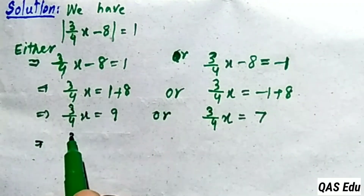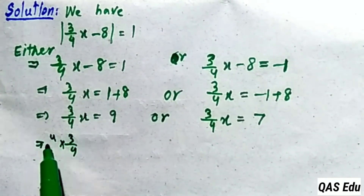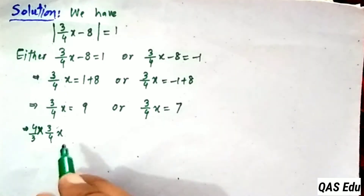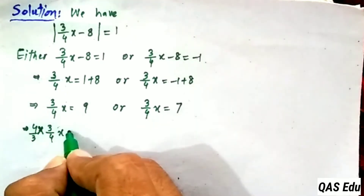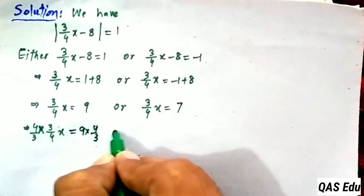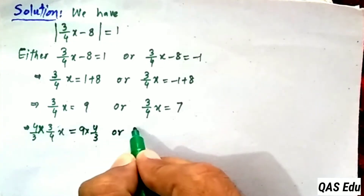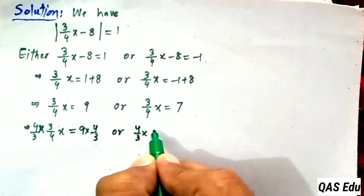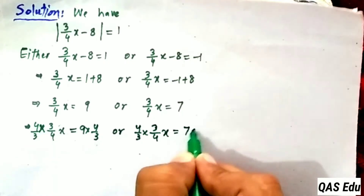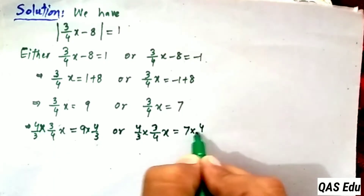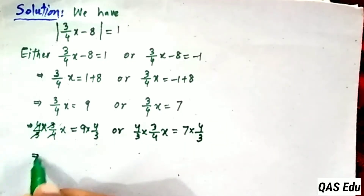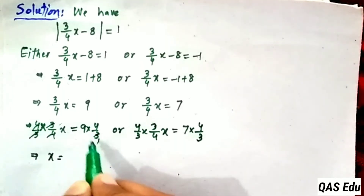To eliminate 3 over 4, multiply both sides by 4 over 3 (the reciprocal). Multiplying: 4 over 3 times 3 over 4 — the 3s and 4s cancel, leaving x. Then 4 over 3 times 9: 3 and 3 give 9, and 3 times 4 gives 12.